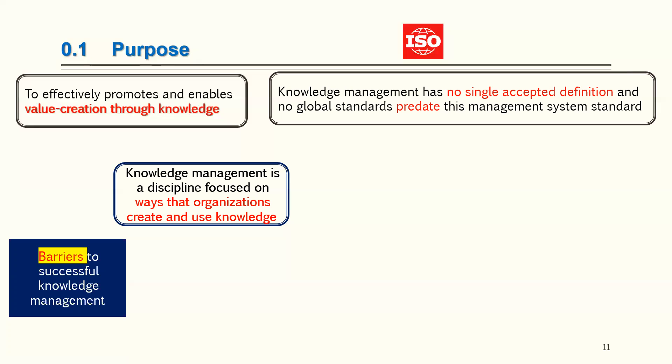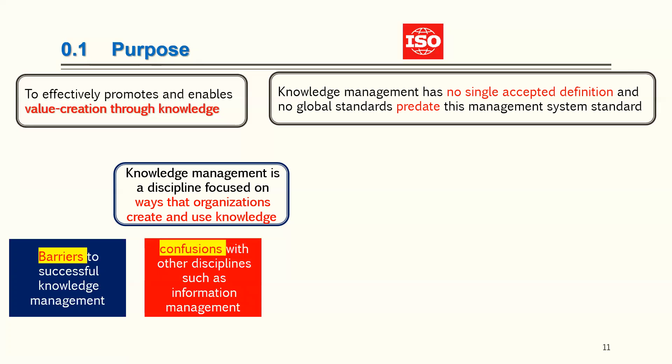Other common barriers for any new system include personal fear and uncertainties, and also inadequate motivation. There is also confusion with other disciplines, especially information management. We have to understand that information management is focused on data and IT, while knowledge management is focused on people and processes. In other words, information management is more about explicit knowledge.